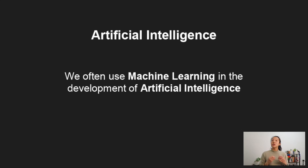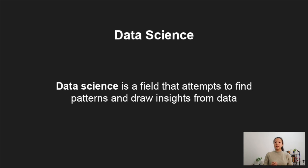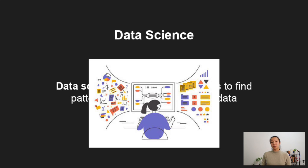Machine learning, on the other hand, is the backbone of AI. We use machine learning to develop AI tools and models, but AI is actually a subset of machine learning — it takes a machine learning model and applies it to mimic human intelligence. Data science is a field that attempts to find patterns and draw insights from data, and it might use machine learning but is not limited to that. Data science is the science of working with data and trying to figure out what the data is trying to tell you.